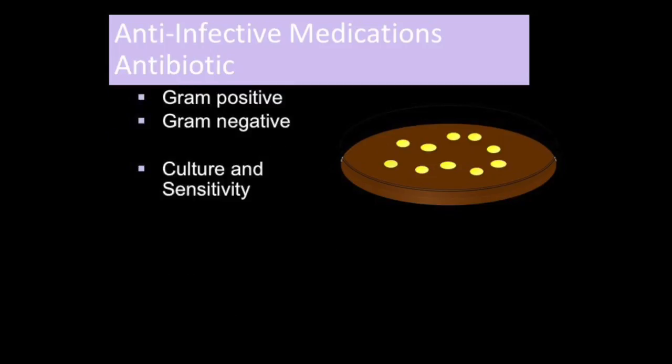Bacteria are named based on their shape and their ability to retain stain. Gram-negative bacteria do not retain the stain and gram-positives do. Whenever possible, blood, sputum, urine, or tissue cultures, depending on the symptoms, should be collected before giving an antibiotic. For labs, a culture and sensitivity (C&S) may be ordered by the physician.